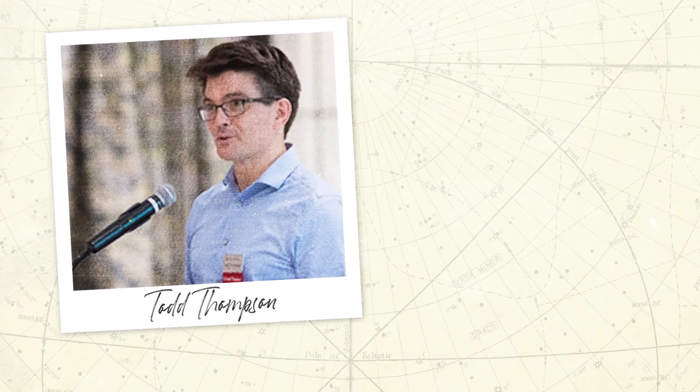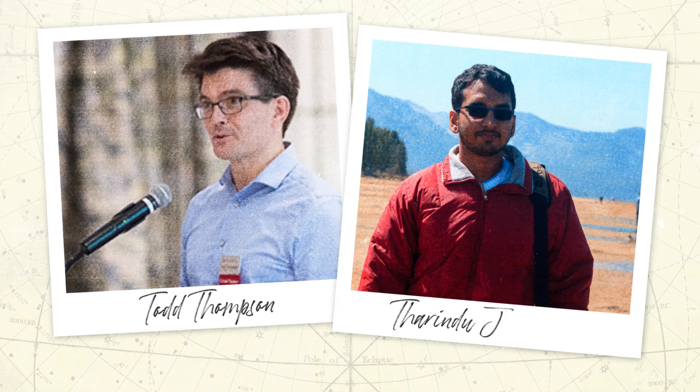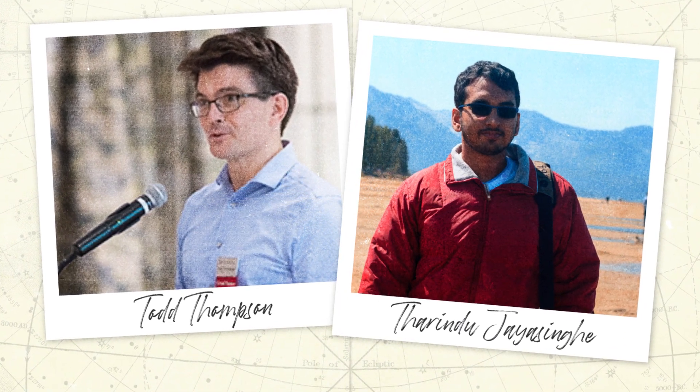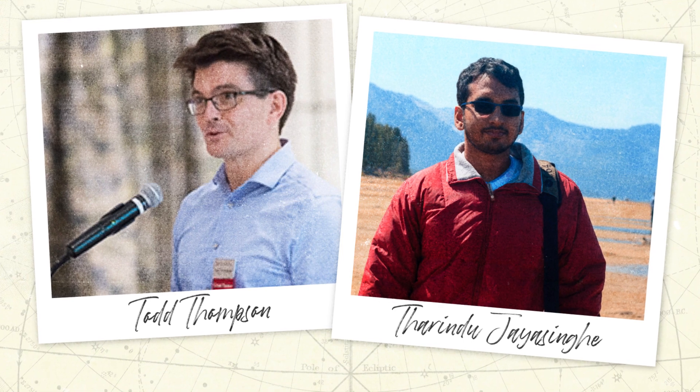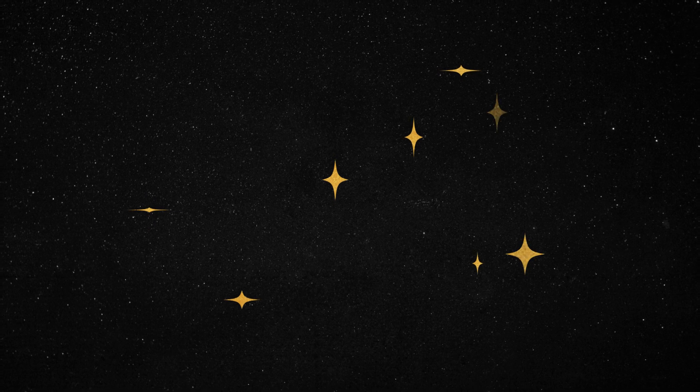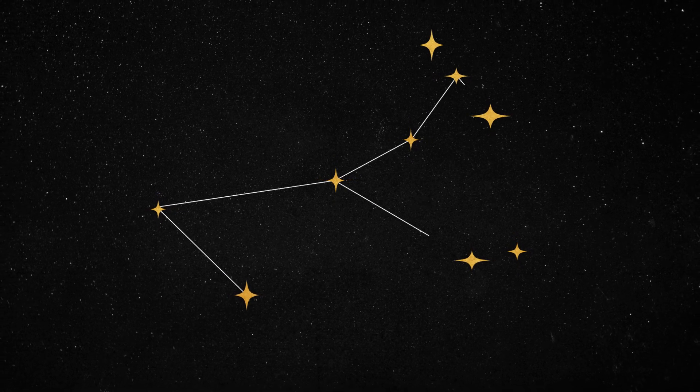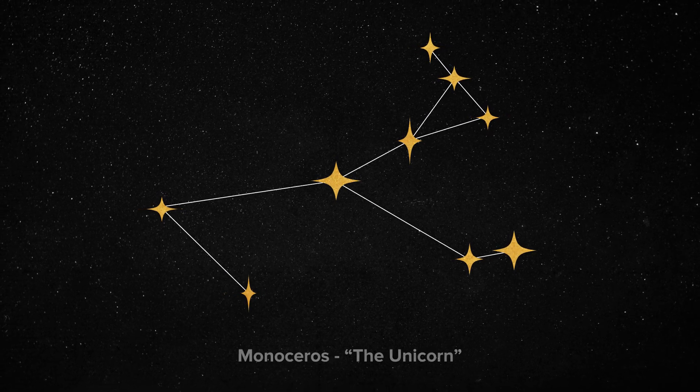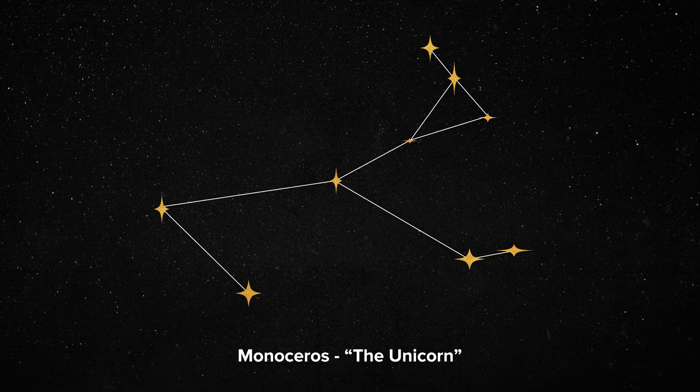Ohio State University professor Todd Thompson and presidential fellow Tarandu Jayasinghe looked at the problem and set out to prove that black holes can be discovered in a different way. They set their sights on an unusual object in the constellation Monoceros, the unicorn constellation.